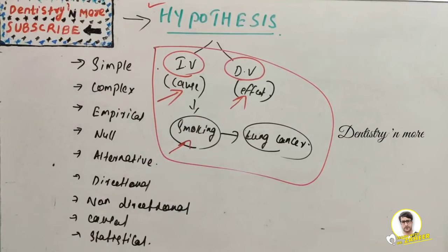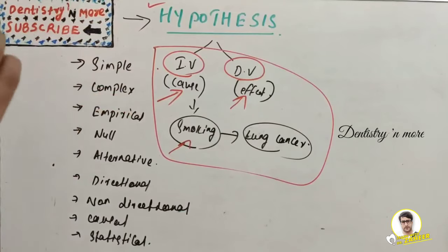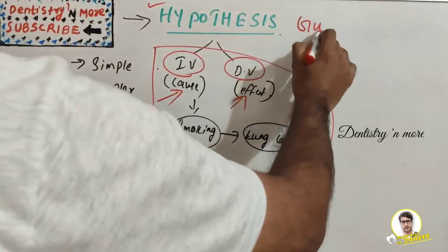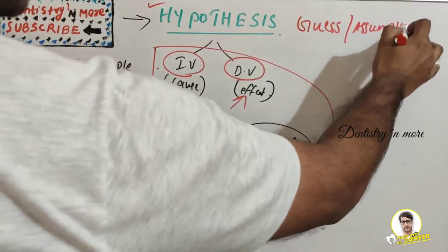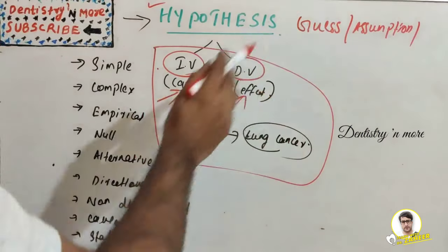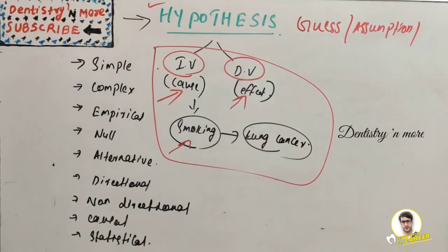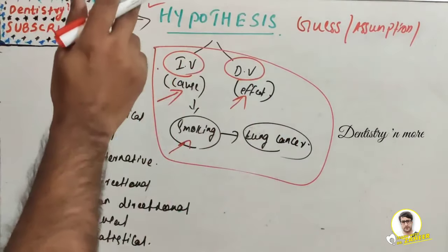Before moving to the classification, let's understand what a hypothesis is. A hypothesis is nothing but an educated guess — it is not a confirmatory statement. It is an assumption about the relationship between variables. We need to test the hypothesis to prove that assumption. The hypothesis might be wrong or it might be true, but we need to do research in order to prove it.